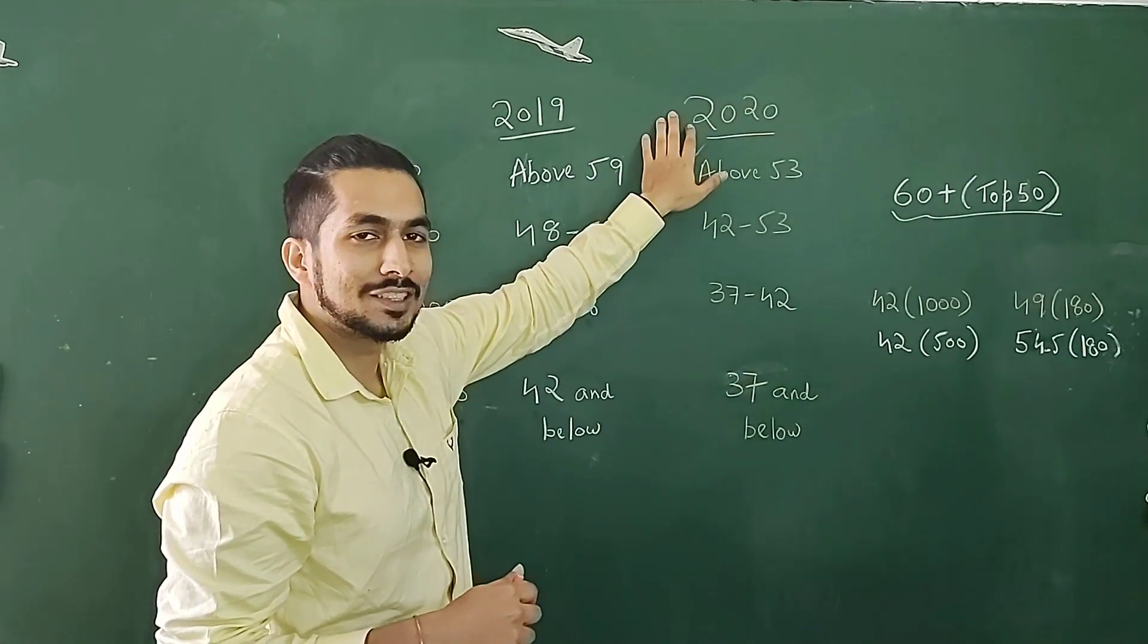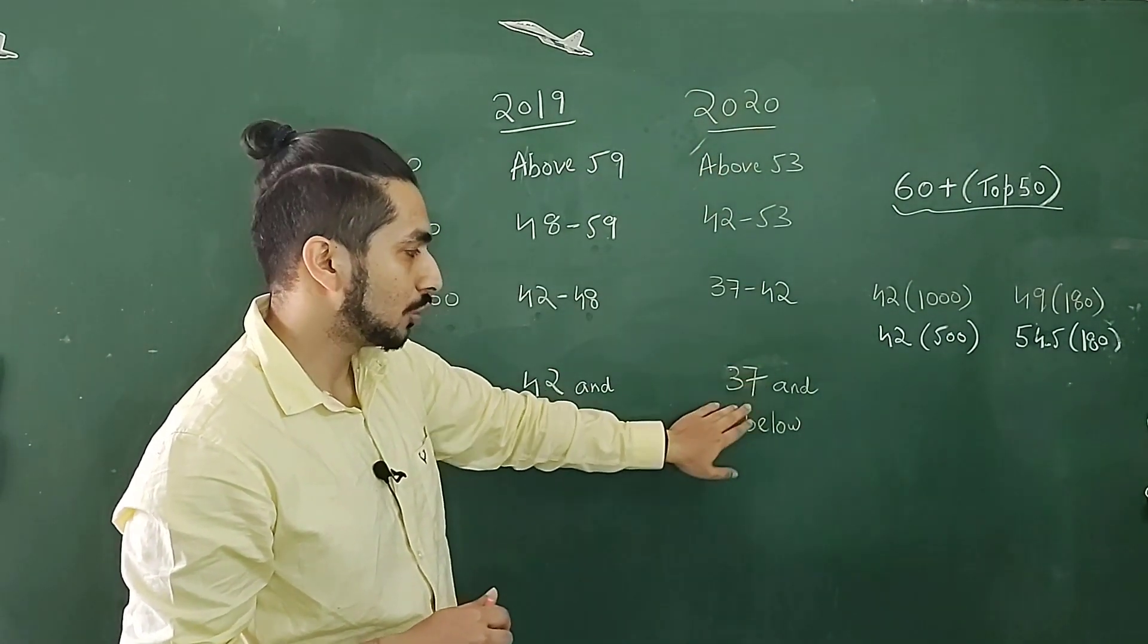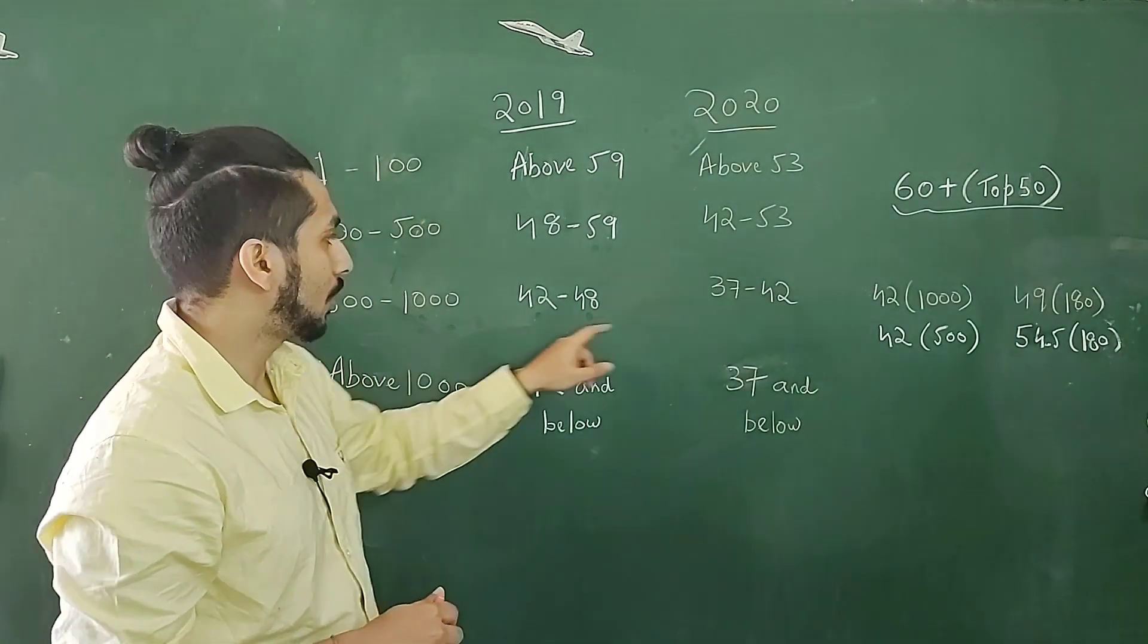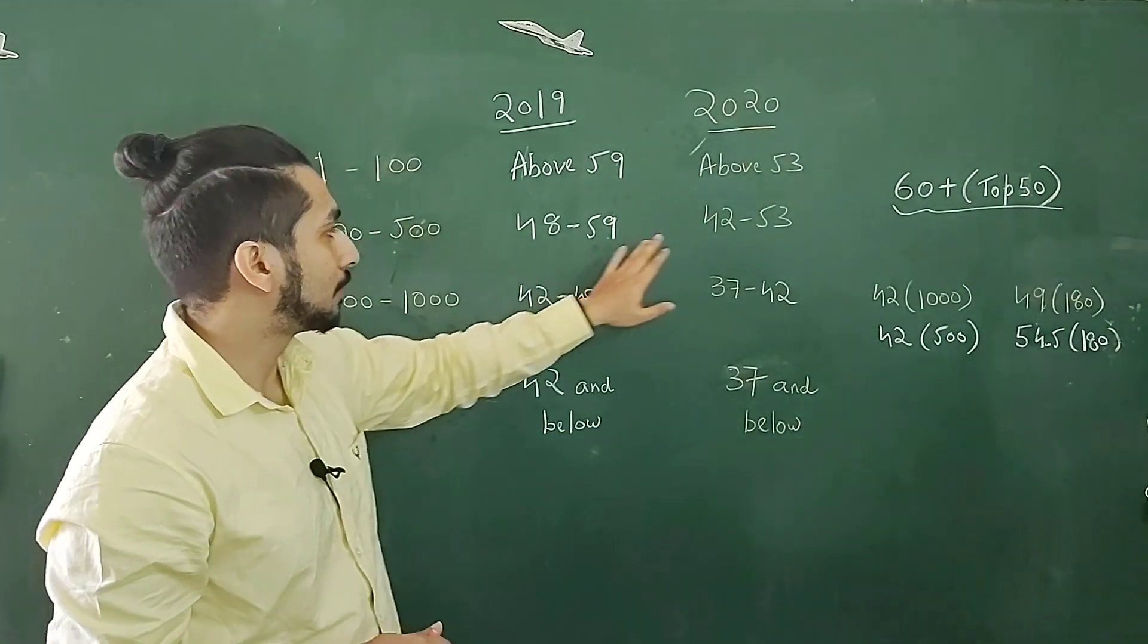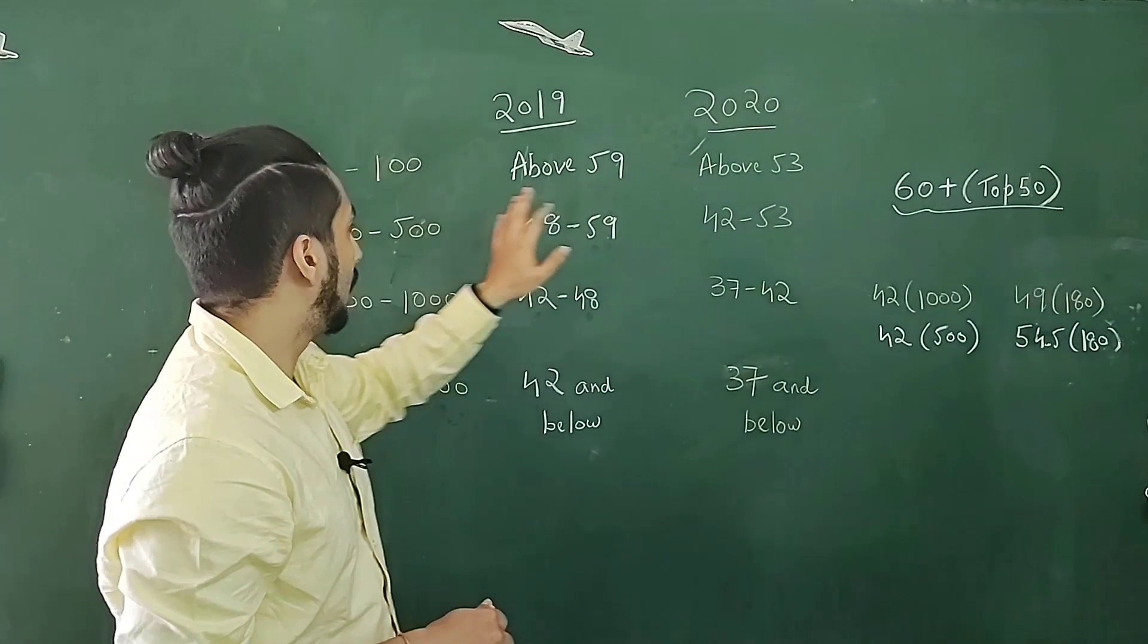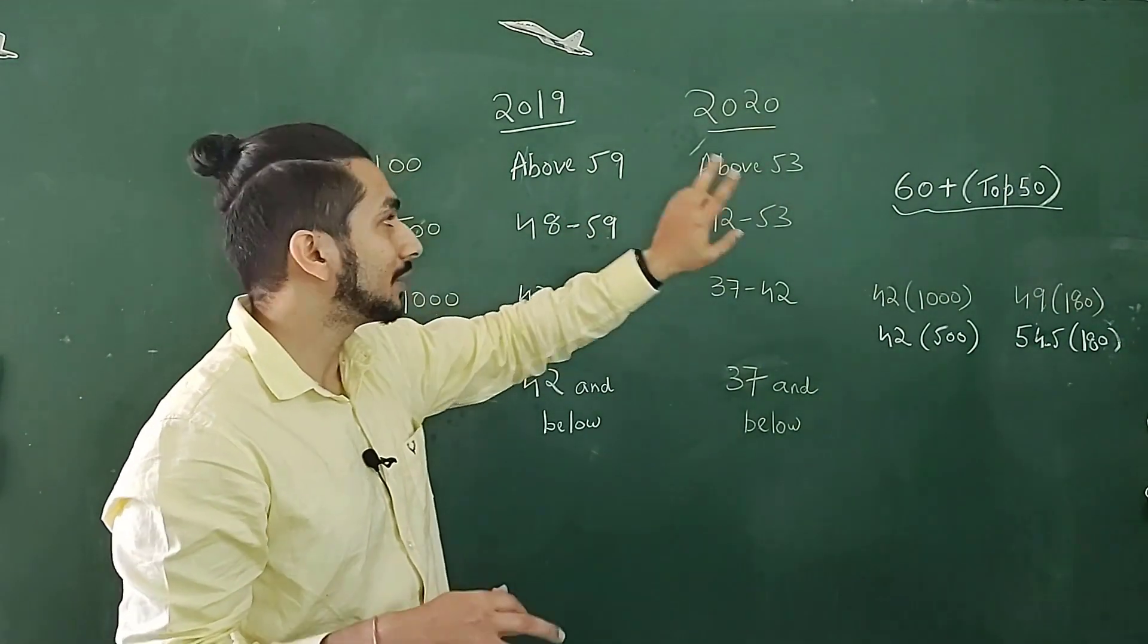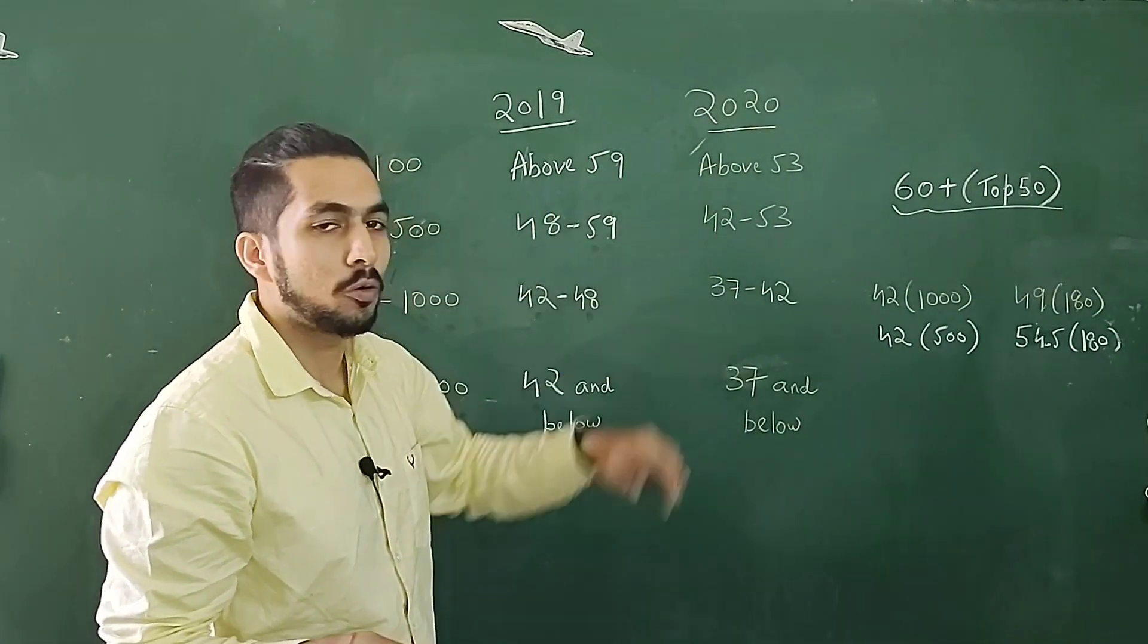Then we come to the GATE 2020 examination, the year with the lowest cutoff. Over there, if you wanted a rank of 1000, you had to get 37. If you wanted between 500 and 1000, you need to have marks between 37 to 42. For 100 to 500, it is 42 to 53 and if you want a top 100 rank, then you had to score above 53. So you can see there is a contrasting difference, approximately a difference of 6 marks in the top 100.